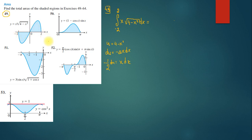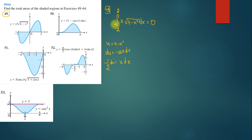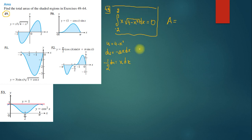The interval is from -2 to 2. If we write the integral from -2 to 2 of x√(4 - x²) dx and find this integral in general, we get 0. You can check this, but if you want to find the area, you need to do the following.